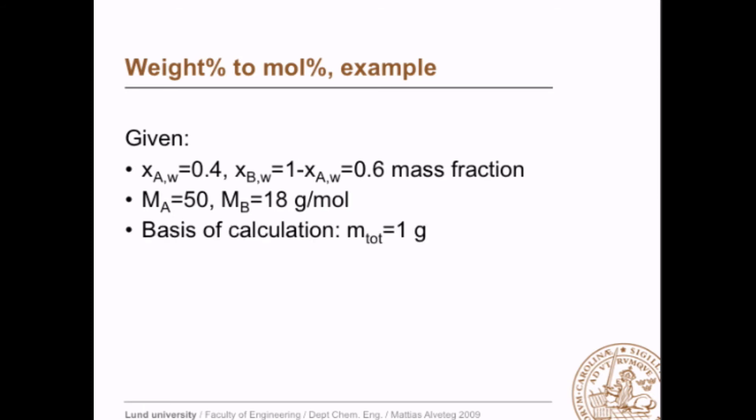Since we have the weight fraction given, let's use the basis of calculation, 1 g in total, which means that we can easily calculate how many grams we have of A, 0.4 and how many grams we have of B, 0.6.